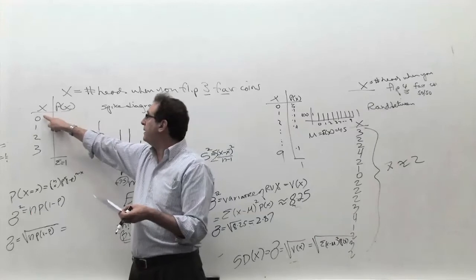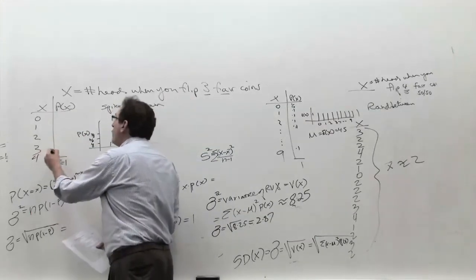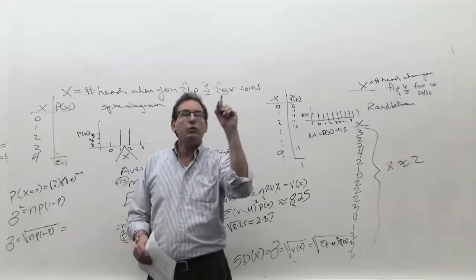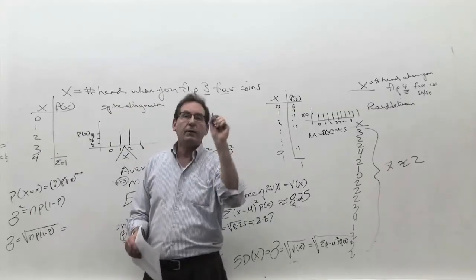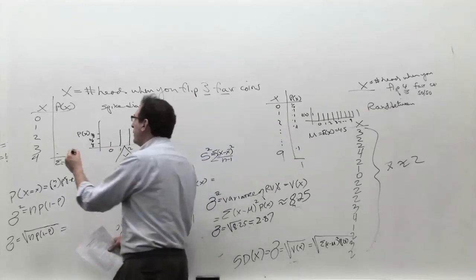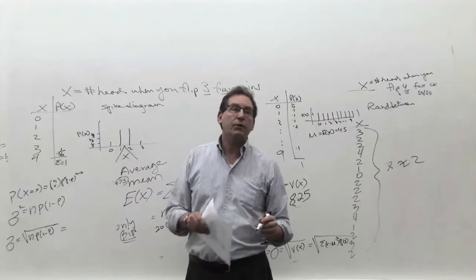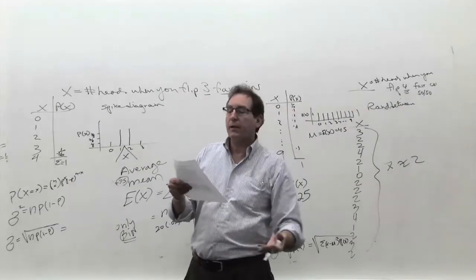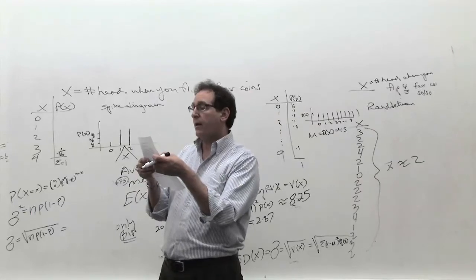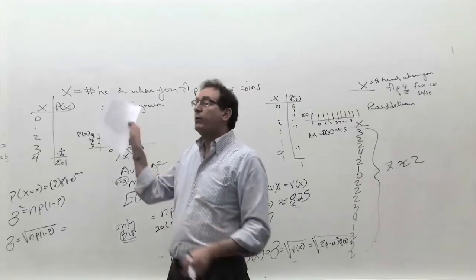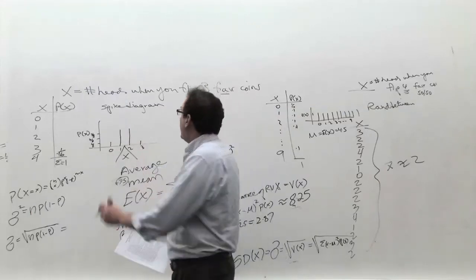Now you're flipping four coins. What's X going to be? Zero, one, two, three, or four. What's the chance of getting all four heads in a row? It's four-choose-zero times one-half to the zero power, or simply a half times a half times a half times a half. Either way you look at it, it comes out to one out of 16. Likewise, you'll fill out the rest of that chart and come up with numbers that add up to 100%.